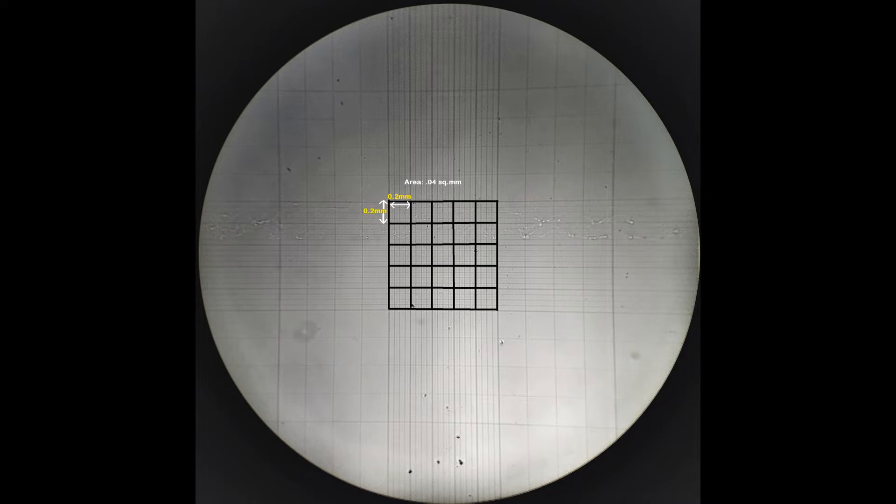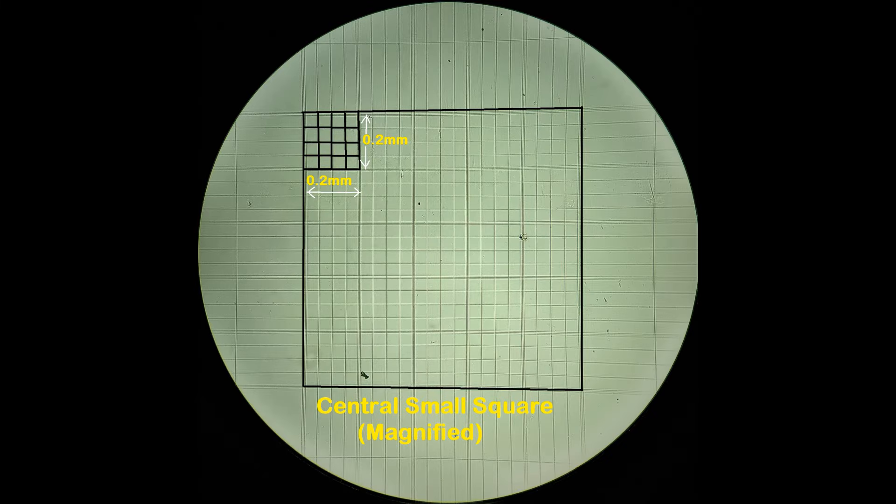The small square at the center of the grid is, however, divided into 25 smaller squares, each square measuring 0.2 by 0.2 mm with an area of 0.04 mm².